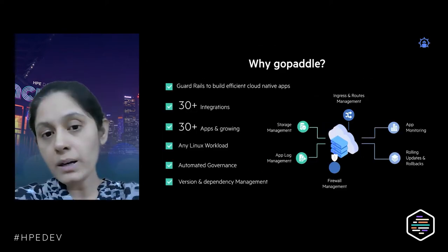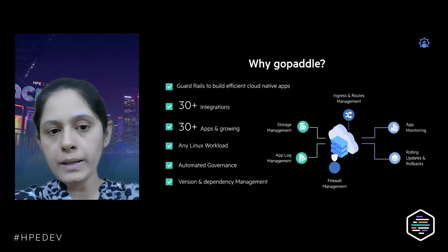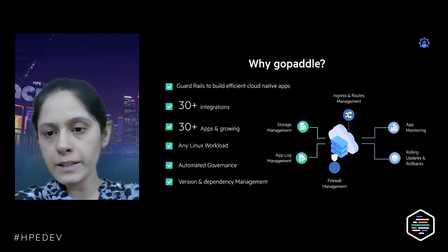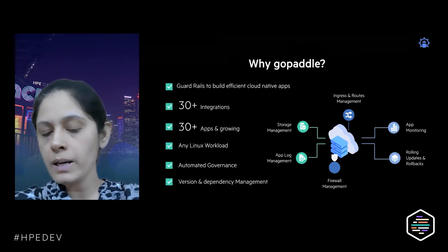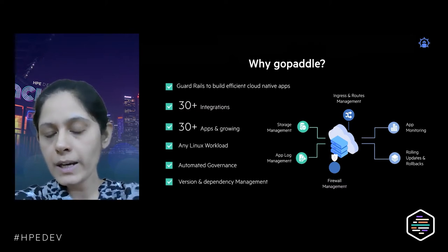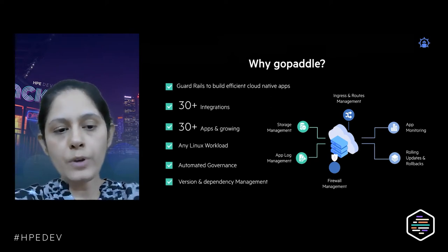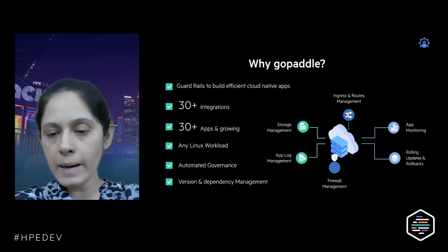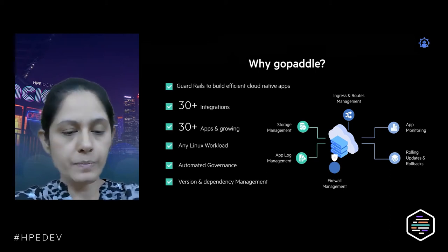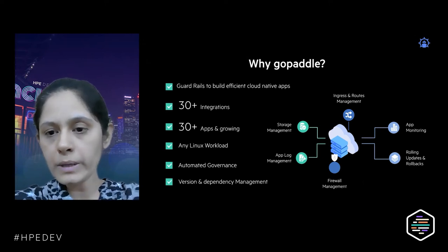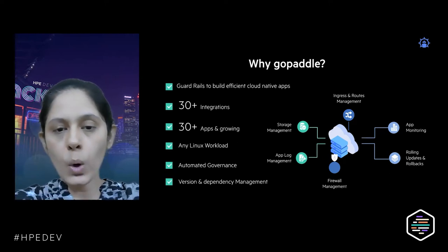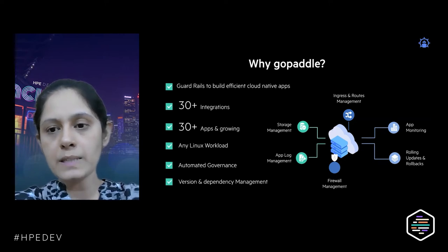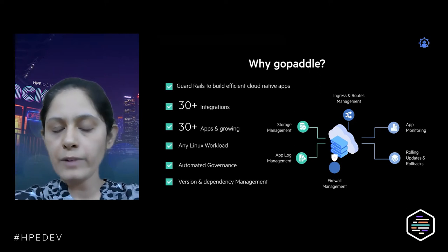Why GoPaddle? It builds an efficient cloud-native app right from day one with all the guardrails. We have around 30-plus integrations with third-party tools, giving out-of-the-box capabilities like storage management, logging, network access management, ingress, rolling updates, and rollbacks. We also have a marketplace with around 30-plus app templates that can be readily used. We support any type of Linux workload and provide automated governance, version controlling, and dependency management across different resources — making this a cost-effective solution for developers to transform from code to deployment.